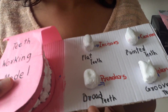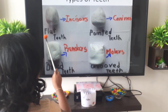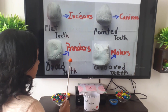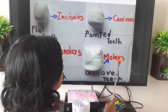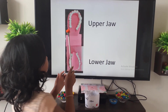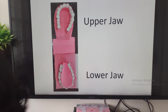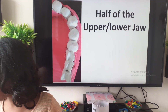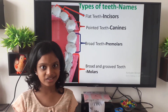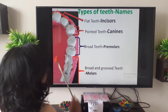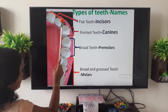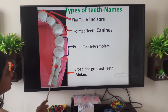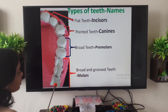Now let us see the other names of the teeth and the types in half of the upper jaw or lower jaw. These two are flat teeth — incisors. This one is pointed teeth — canines. These two are broad teeth — premolars. These three are broad and grovel teeth — molars.